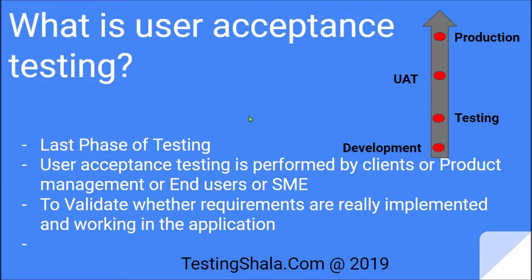By looking at this chart you can easily understand this is the last phase of testing before we put the application into production. User acceptance testing is the last phase of testing, and it is normally performed by the client, product management, end user, or a subject matter expert. They validate each and every requirement against the application to ensure that whatever was agreed upon and signed off in the beginning as part of the requirement specification has been implemented, and whether the application is really working as expected. If any critical tests do not pass, the application may not go to production until those issues are resolved.